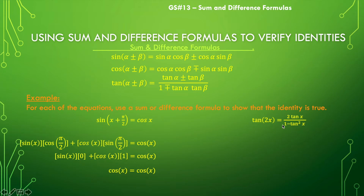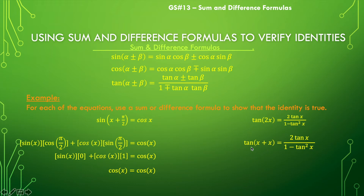For the example on the right, I don't see a sum or difference as it's written. But I can take the left-hand side and break it apart, because 2x is the same as x plus x. Then I can use my tangent sum formula and expand that, using the top signs. So expanding tangent of x plus x gives tangent of x plus tangent of x, divided by 1 minus tangent of x times tangent of x.